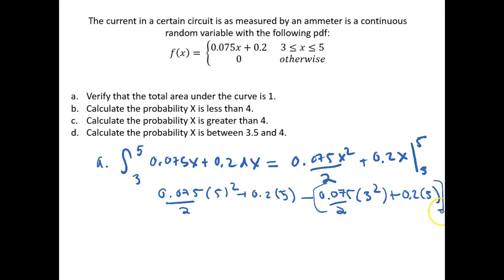And this should be in brackets. We're subtracting all of that off. So then what do we get from these values? This then is equal to 0.9375 plus 0.2 times 5 is equal to 1